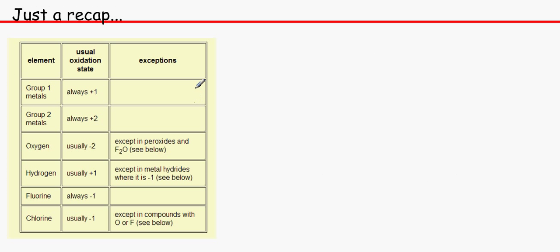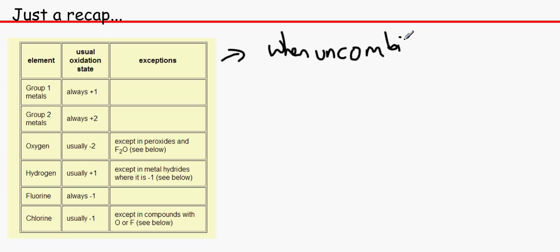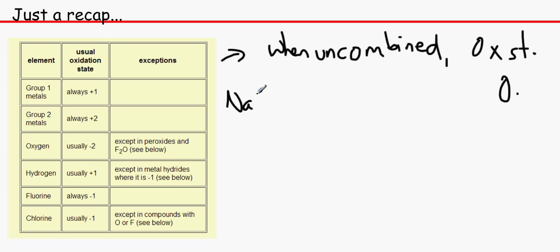Just to recap — this you should know from AS chemistry. Group 1 metals will always have an oxidation state of +1 when combined with something. When uncombined, the oxidation state will be 0, always — because it hasn't lost or gained any electrons yet. So when we have Na⁺, the oxidation state would usually be +1.